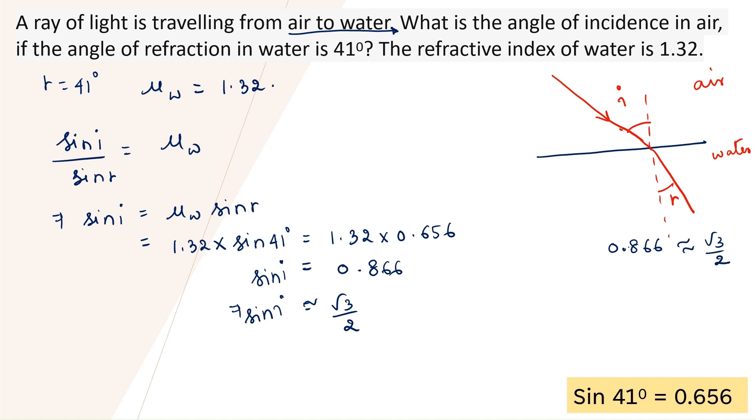So, for which angle is sine equals to root 3 by 2? So, i should be around 60 degrees. So, angle of incidence is 60 degrees, okay. And also, I have written value here, sine inverse of 0.866 is 60 degrees. Root 3 by 2 is approximately 0.866.